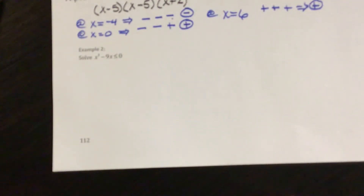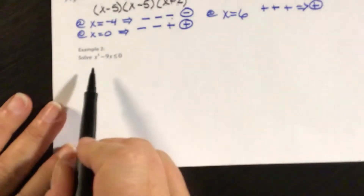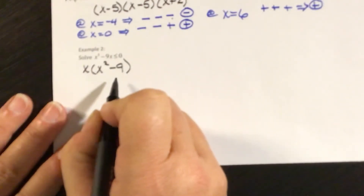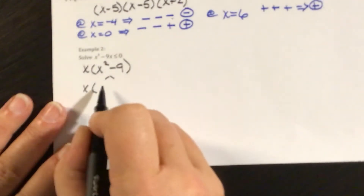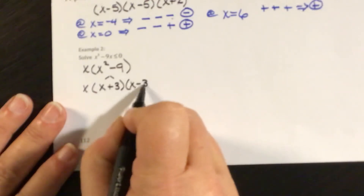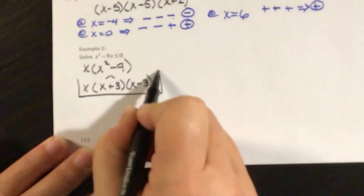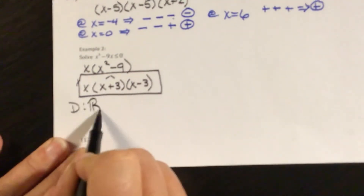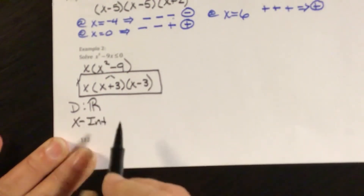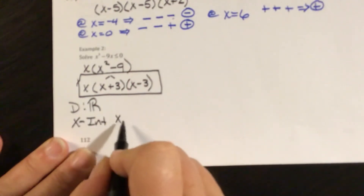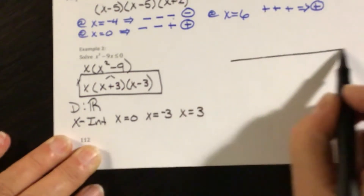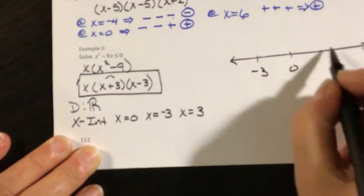The next example: x cubed minus 9x is less than or equal to 0. Before doing anything, I want to factor. I see a greatest common factor of x, giving x times x squared minus 9. That's a difference of squares, so it factors as x times x plus 3 times x minus 3. This is a polynomial, so domain is all real numbers. My x-intercepts are x equals 0, x equals negative 3, and x equals positive 3. On the number line, I place negative 3, 0, and positive 3.